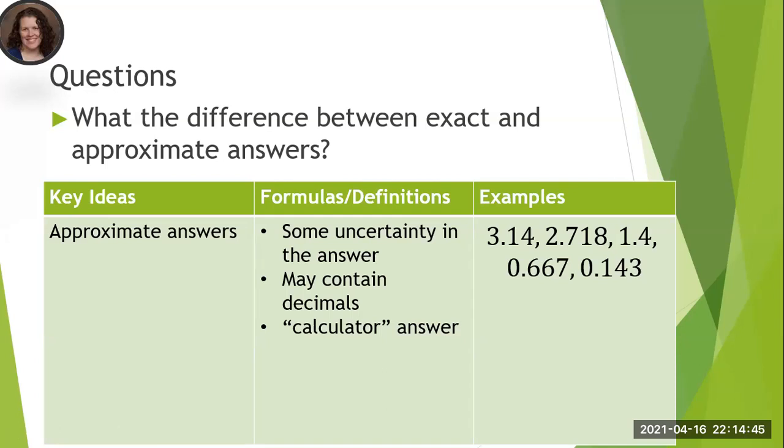And so that's the key difference is whether or not you have the whole thing. If you know that the answer is pi or the square root of 2 or the square root of 3, you have the whole thing. But if you give the approximate answer, we don't have the whole thing.